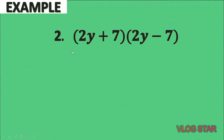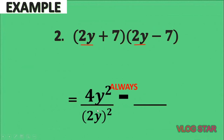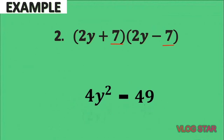Let's have another example: the quantity 2y plus 7 times the quantity 2y minus 7. They are almost the same — one is plus while the other is minus — so the shortcut will work here. Setting up a binomial and putting a minus sign: squaring the first term, we square both 2 and y to get 4y squared. For the second term, we square 7 to get 49. Therefore the result is 4y squared minus 49.